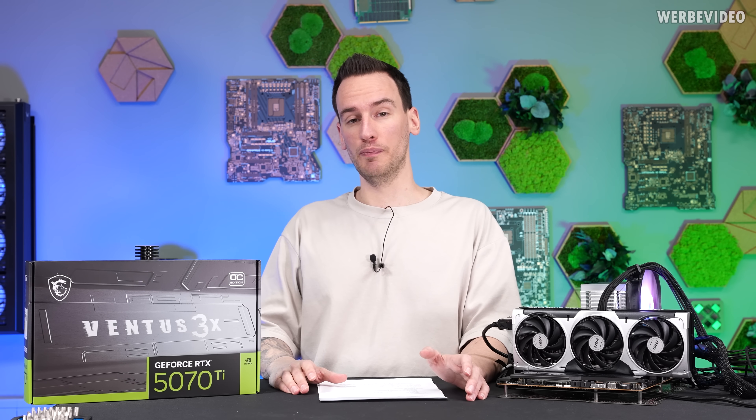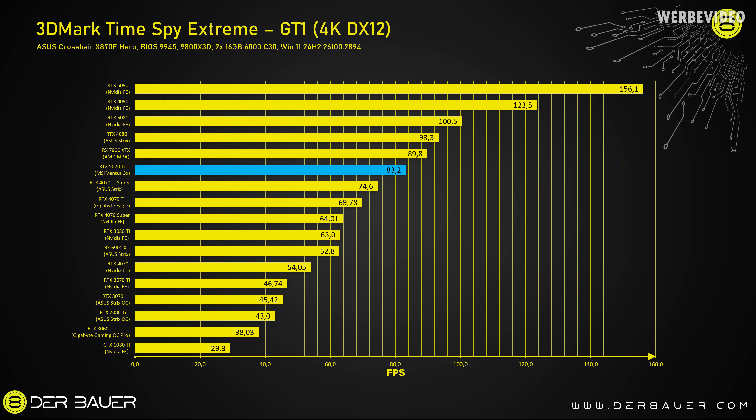As a first metric, we can look at the 3DMark Timesplay Extreme and also at the 3DMark Speedway to get an impression of both older and newer games. For older games and raster performance, 3DMark Timesplay Extreme GT1 is a very good indicator. There we can see the RTX 5070 Ti being about 12% faster than the 4070 Ti Super, and about 7% behind the 7900 XTX.